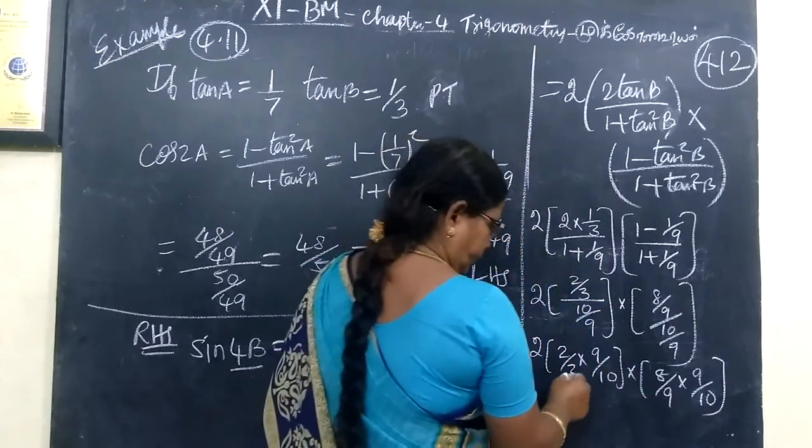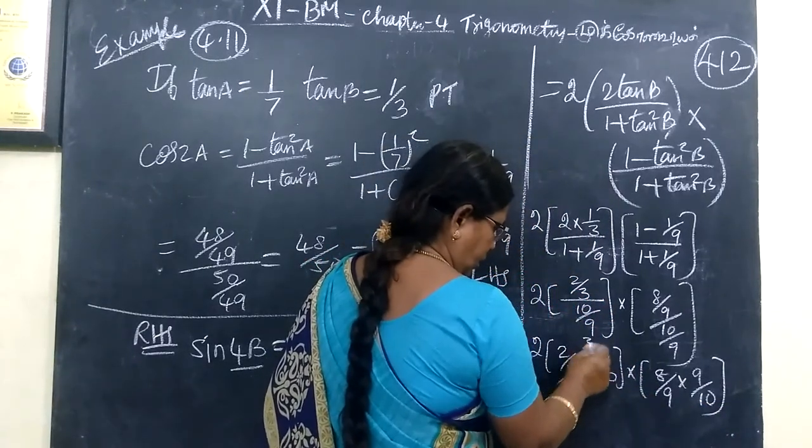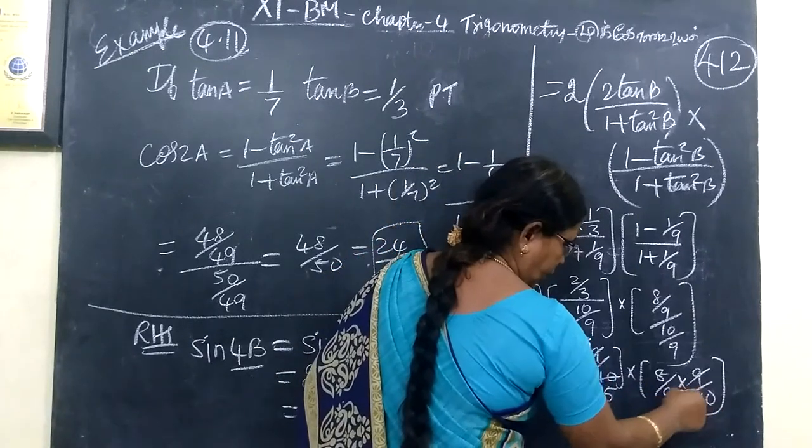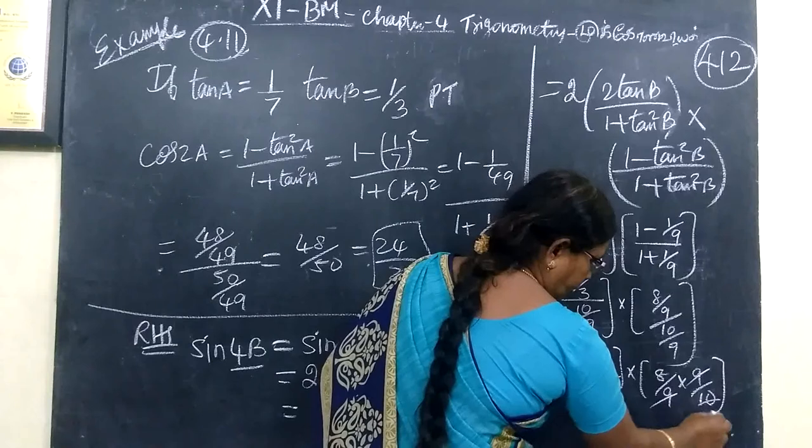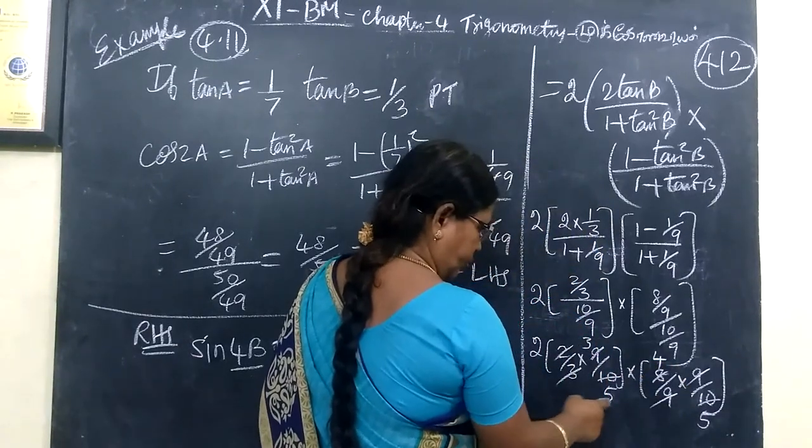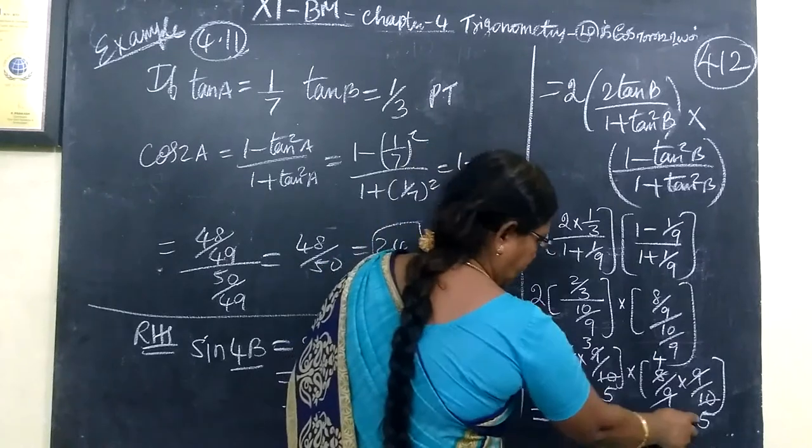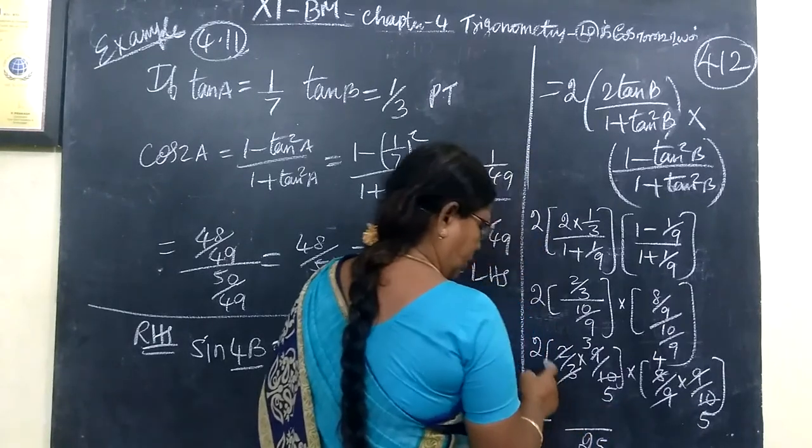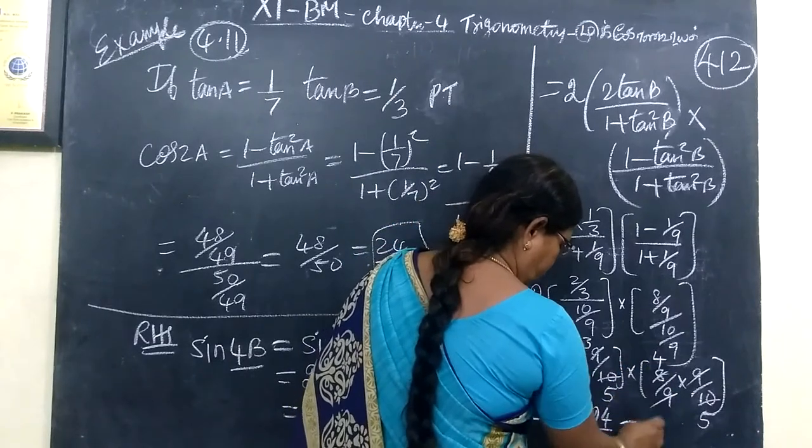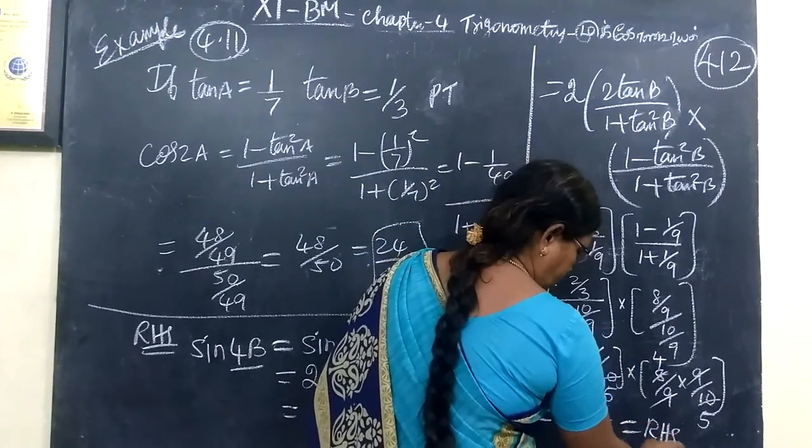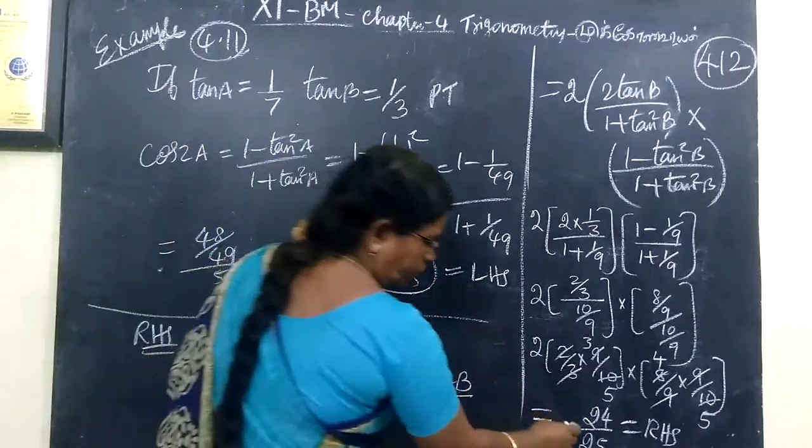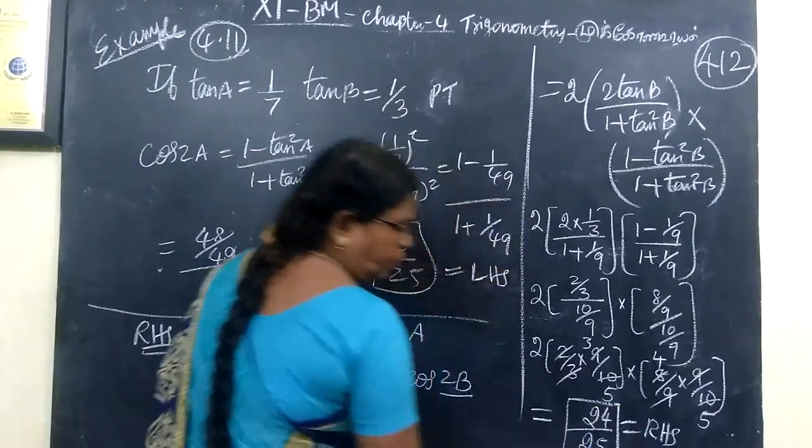2 3s are 6, 6 4s are 24. So equal to 24 by 25. So this is the answer. LHS is 24 by 25. RHS is 24 by 25.